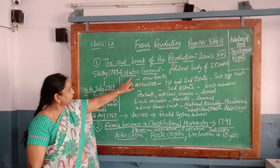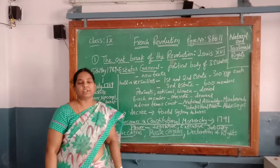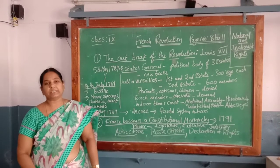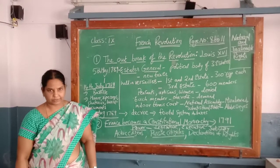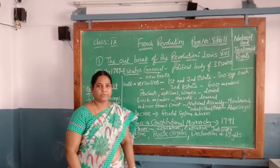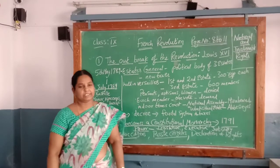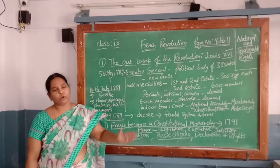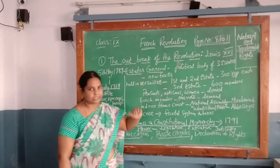So what is meant by the Estates General? The Estates General is a political body. In the previous class we learnt that there are three estates: the 1st estate, 2nd estate, and 3rd estate. The 1st estate is the clergy — church officials. The 2nd estate is the nobility. And all the manual labourers are included in the 3rd estate.